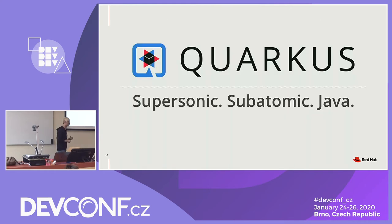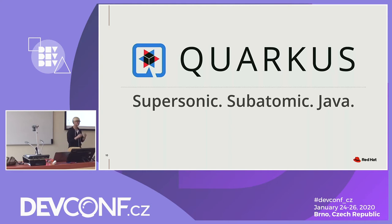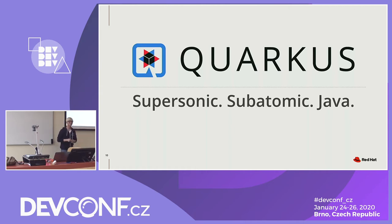That's why Quarkus was made. The name 'quark' comes from physics — a quantum, very tiny particle. Someone told me why didn't you name it 'Ant-Man' because people would easily remember it, but we don't have any money to give Marvel Studios and Disney. So Quarkus means very small and engineering-focused — making things faster, easier, and higher performance.